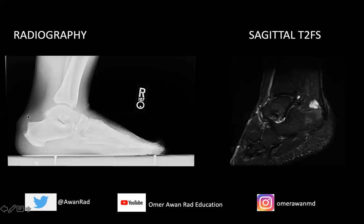We also have some thickening of the distal Achilles tendon. The Achilles tendon inserts onto the calcaneal tuberosity here, and it appears very prominent. The distal Achilles tendon appears somewhat thickened, and there's some soft tissue fullness and prominence adjacent to it. Finally, this space deep to the Achilles tendon and posterior to the posterior process of the talus is known as Kager's fat pad. Instead of being dark and composed of fatty tissue, there's some soft tissue density in Kager's fat pad.